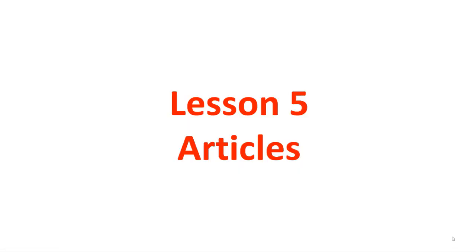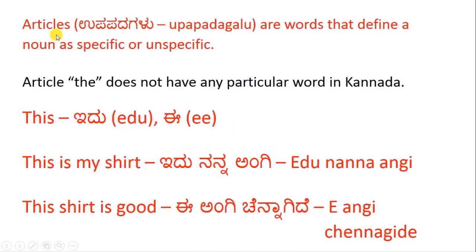Hello and welcome. In this lesson, we will learn about articles. Articles, called Uppapadagallu, are words that define a noun as specific or unspecific. The article 'the' does not have any particular word in Kannada. So, you see the word 'the' in English, but it does not have any equivalent in Kannada.